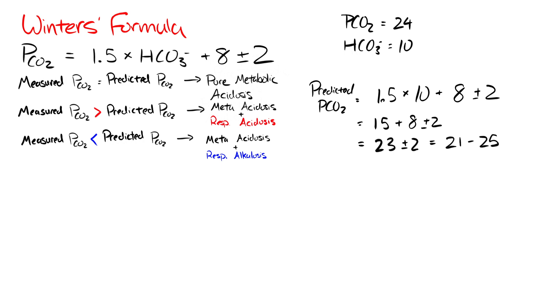Now, let's compare our measured PCO2 with our predicted range. As you can see, 24 fits within our predicted range of 21 to 25. This fits with scenario number 1, which is a pure metabolic acidosis with appropriate respiratory compensation and no primary respiratory pathology.